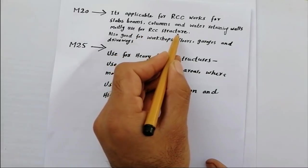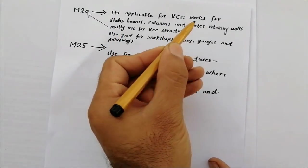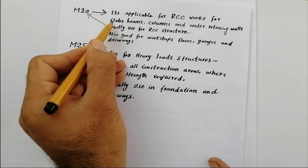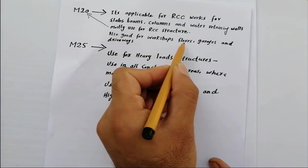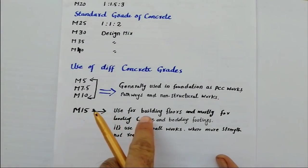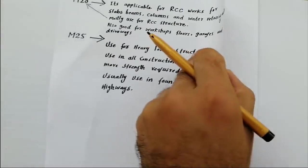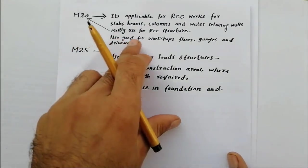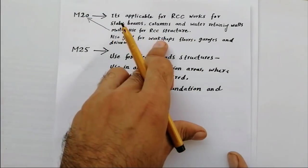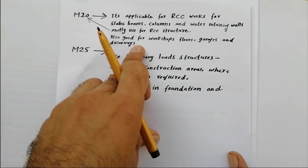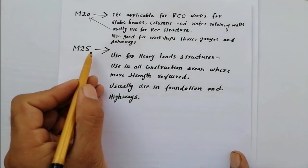M20 grade of concrete is mostly used for RCC structures, which include retaining walls, columns, beams, and slabs. M20 is also good for workshop floors. You cannot use M15 grade for workshop floors because there are heavy loads in workshops. M20 grade concrete can be used in workshop floors, garages, and driveways where heavy loads are present.